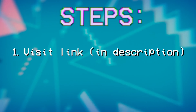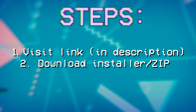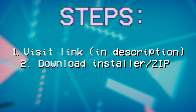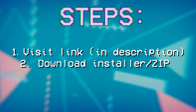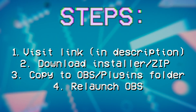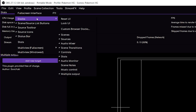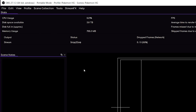This plugin is about as simple as it gets, so I'm not going to waste too much time with it. You go to the link in the description below, you click download, you download the installer — or if you use portable OBS, you download the zip, copy it to where you need it, and relaunch OBS. Now you're probably not going to see anything, but you go to View, then Docs, then Scene Notes.